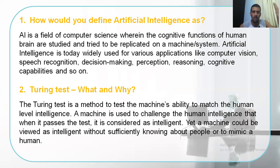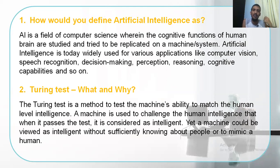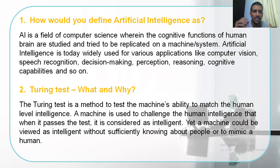Now that we understand the difference between myth and reality, let us see why. Artificial intelligence is basically a field of computer science which focuses on the cognitive functions of the human brain that are studied and closely being tried to be replicated. What humans do comes to us by nature, while what a machine does comes by virtue of the history it has collected or that we have given it. Artificial intelligence as of today is being used for applications like computer vision, speech recognition, decision making, perception, understanding, reasoning, and cognitive capabilities. It's just evolving.